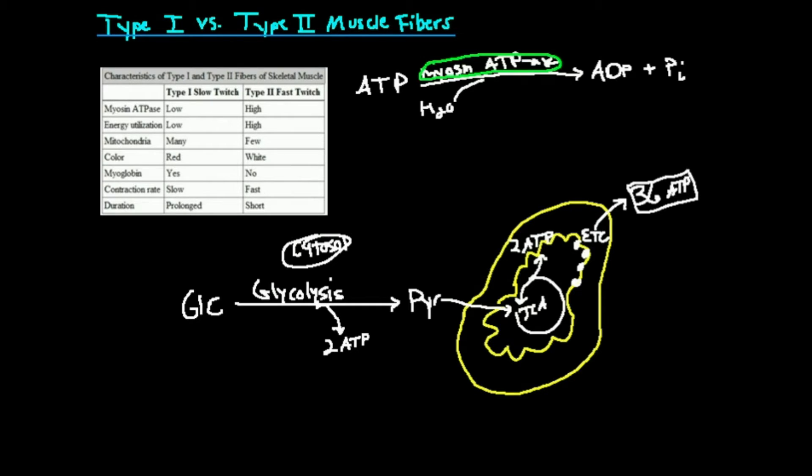So type 2 fibers have fewer mitochondria, and type 1 have more. So which fiber type produces more ATP? Well, it's type 1. Type 1 produces more ATP. Because type 2 has fewer mitochondria, type 1 have much more mitochondria. So they're able to produce much more of this 36 ATP, because that's done in the mitochondria.